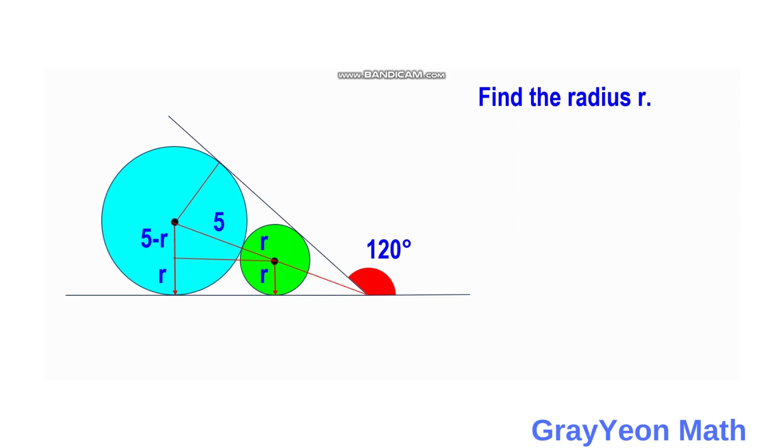Next, we focus on the angles. If this exterior angle is 120 degrees, then this angle should be 60 degrees.